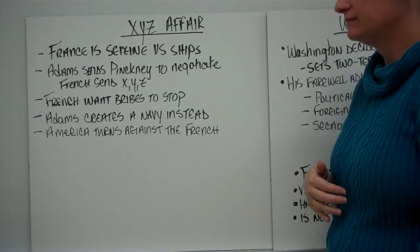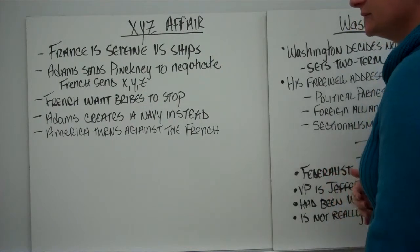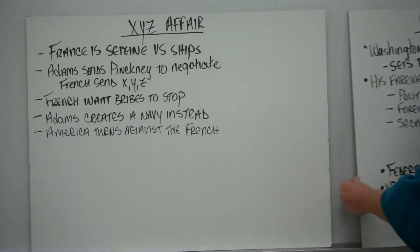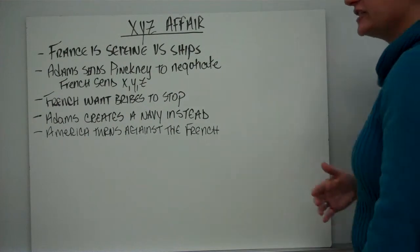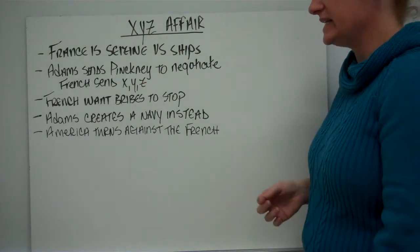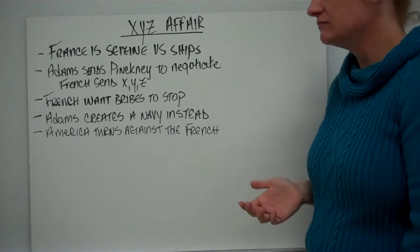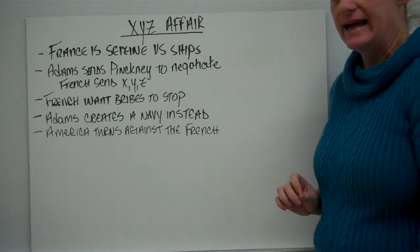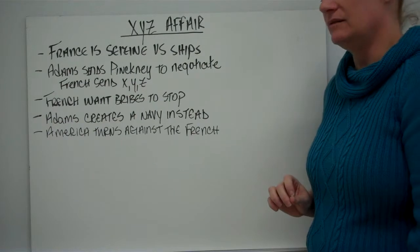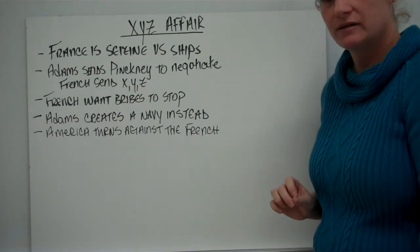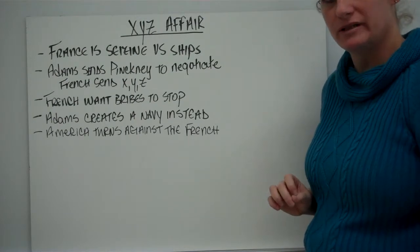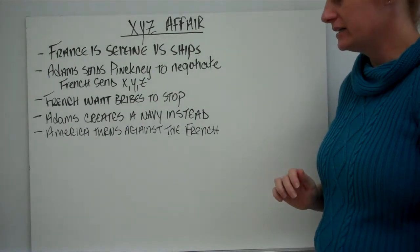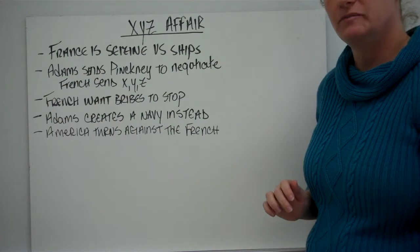The XYZ Affair: France was seizing U.S. ships. Adams sent Pinckney to negotiate, since he had been very successful with the Spanish. The French sent three people, known as X, Y, and Z, and essentially told the Americans that if they wanted France to stop, they would have to pay bribes. Instead of agreeing, Adams formed a navy — probably the most successful thing he did during his term. America turned against the French, and that sentiment lasted for a good period of time.